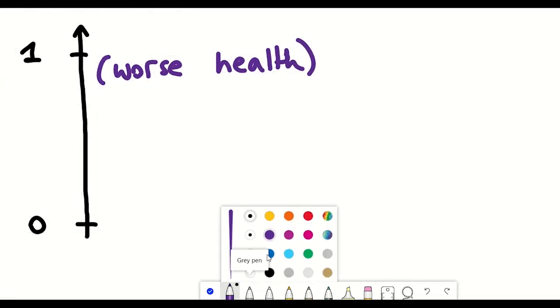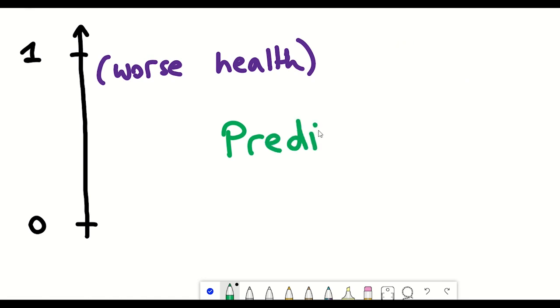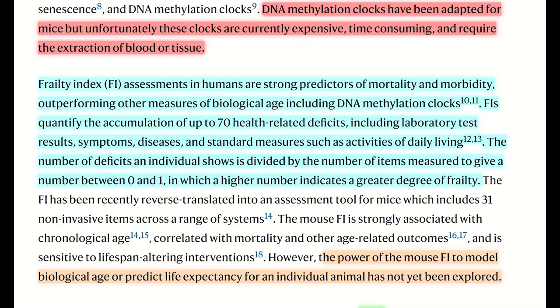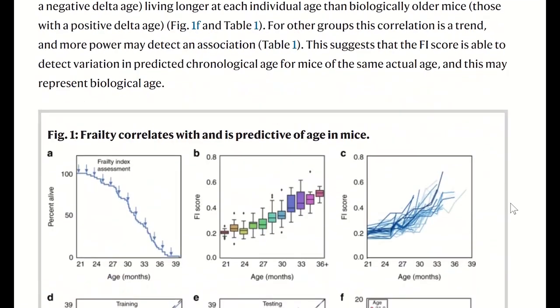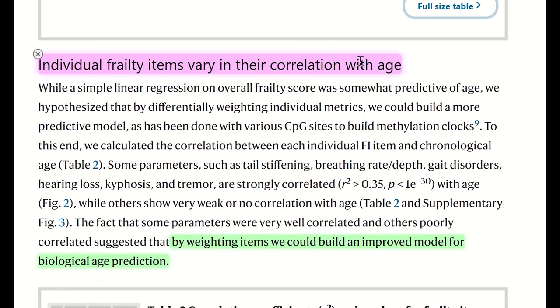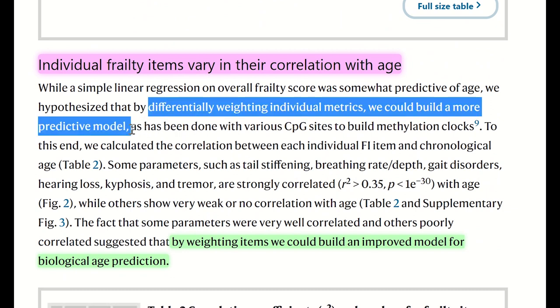So the frailty index takes into account each of the different health-related deficits equally. However, the authors suspected that a potentially more predictive model of biological age could be achieved if the different metrics were differentially weighted within the model. And so by doing this, it can take into account how individual frailty index items vary in their correlation with age.